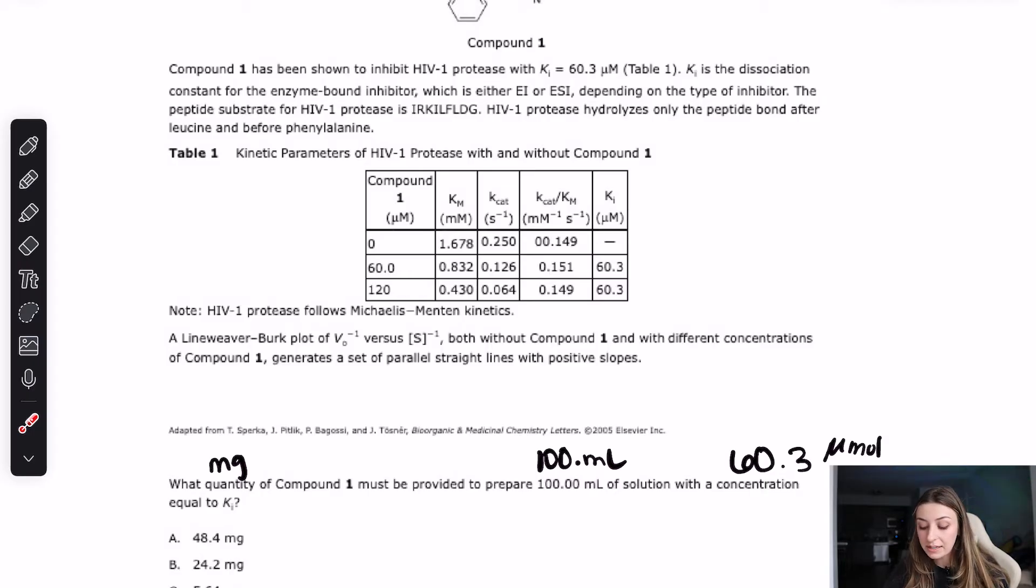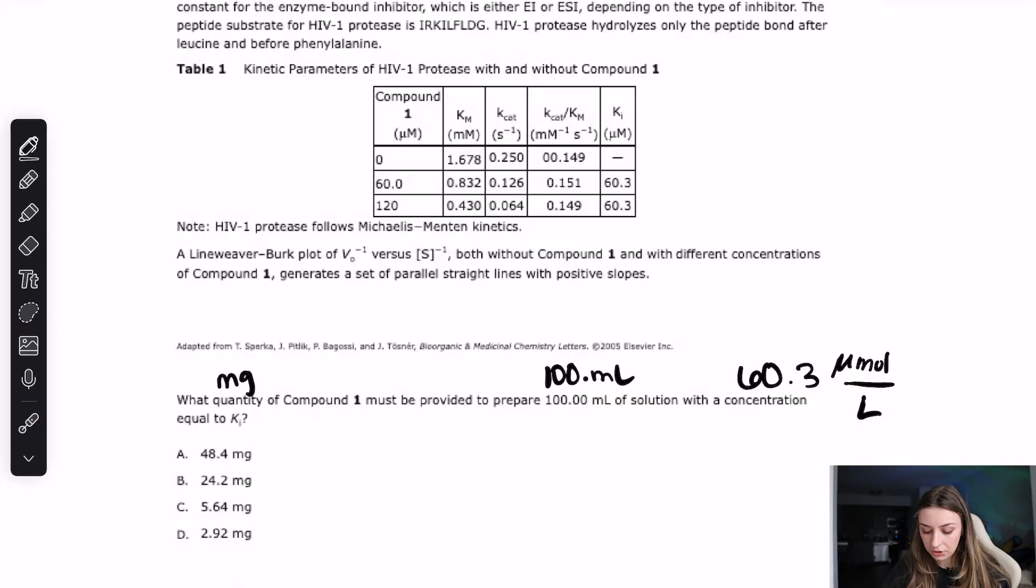So the concentration they're talking about is 60.3 micromolar, which is also 60.3 micromoles per liter. So now to break down this question even further, if you're still not understanding it, it's basically saying to get this concentration with this amount of liquid, how many milligrams of compound one must have put in there. And now you can set up just a dimensional analysis, mark out some units, end up with a milligram, and you're probably going to get this question right.